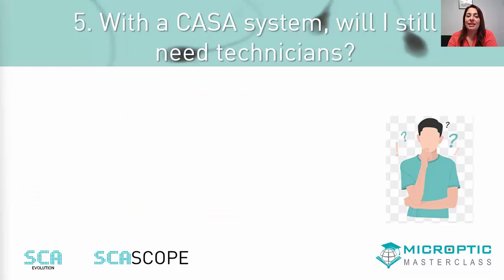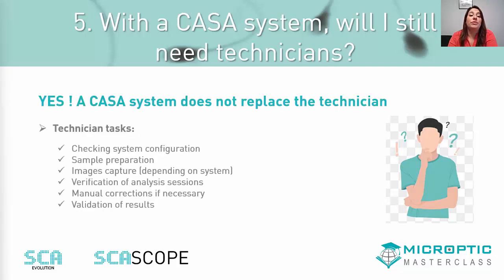Fifth question: with a CASA system, will I still need technicians? The work of the technician is crucial. A CASA system does not replace the technician — it is a helping tool for assessing the quality of the sample. The technician has an important role, especially for checking the system configuration, sample preparation, image capture, verification of the analysis, manual corrections if necessary, and validation of the results. It is important to well train the team in proper CASA system use, and to make sure that existing protocols and techniques are compatible with the CASA system or that new ones can be implemented.